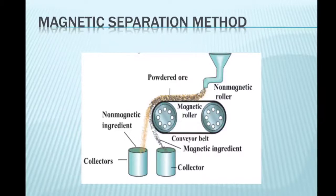The particles of the non-magnetic part in the ore are not attracted towards the magnetic roller. Therefore, they are carried further along the belt and fall in the collector vessel placed away from the magnetic roller. At the same time, the particles of the magnetic ingredients of the ore stick to the magnetic roller and therefore fall in the collector vessel near the magnetic roller.